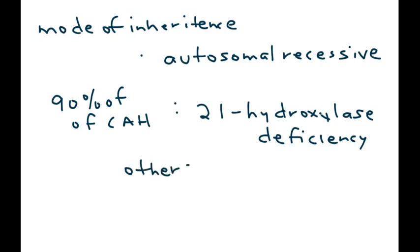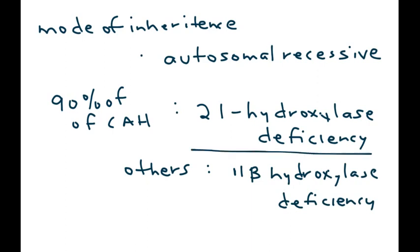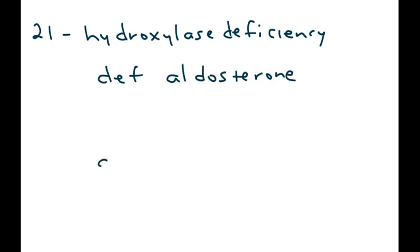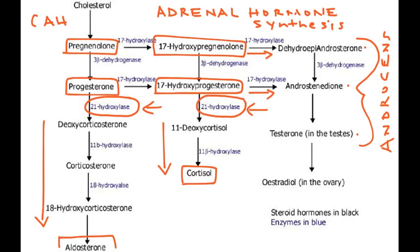There are other enzyme deficiencies in CAH — for example, 11-beta hydroxylase deficiency — but we'll focus on 21-hydroxylase. Looking at the diagram again: if you have 21-hydroxylase deficiency, you cannot produce aldosterone, and you will also have a deficiency of cortisol. The diagram shows this directly — if the enzyme is deficient, you won't progress along these pathways. You won't get cortisol or aldosterone; that enzyme is critical.